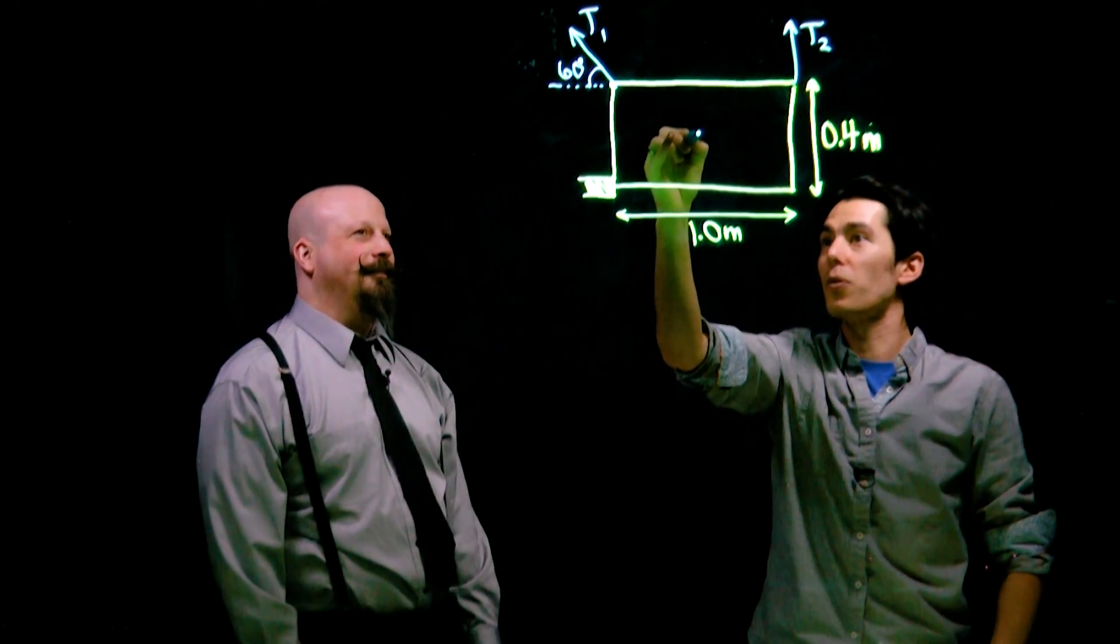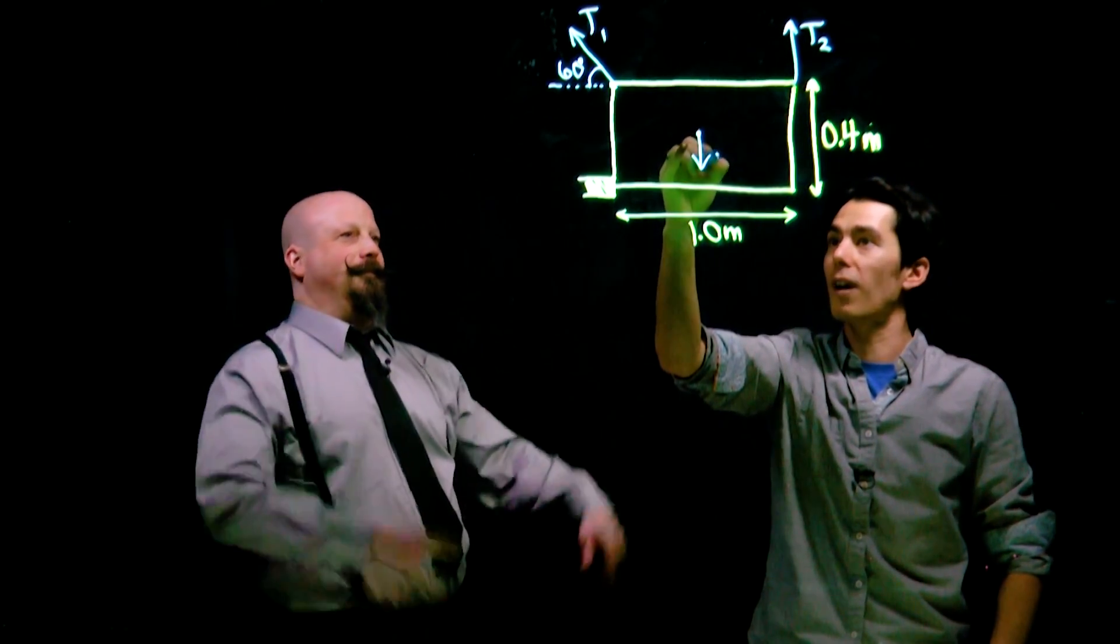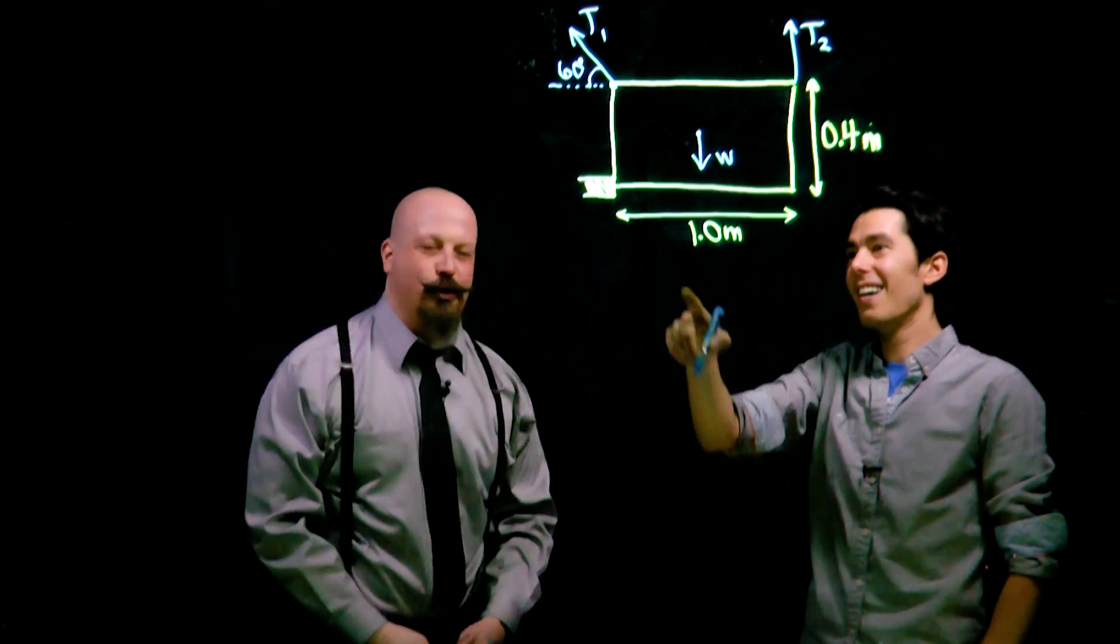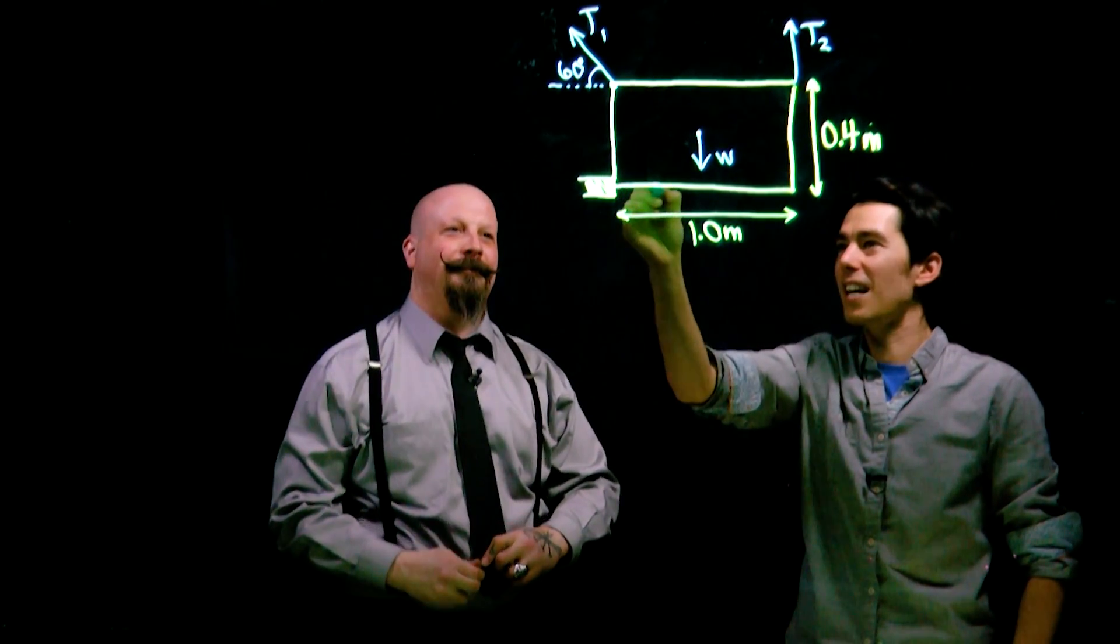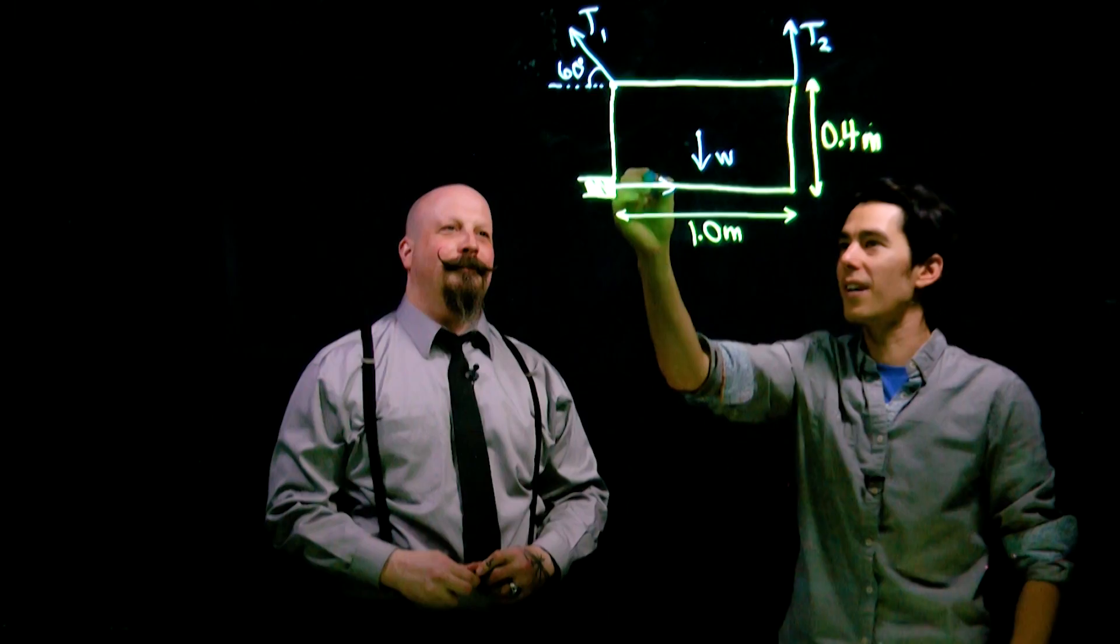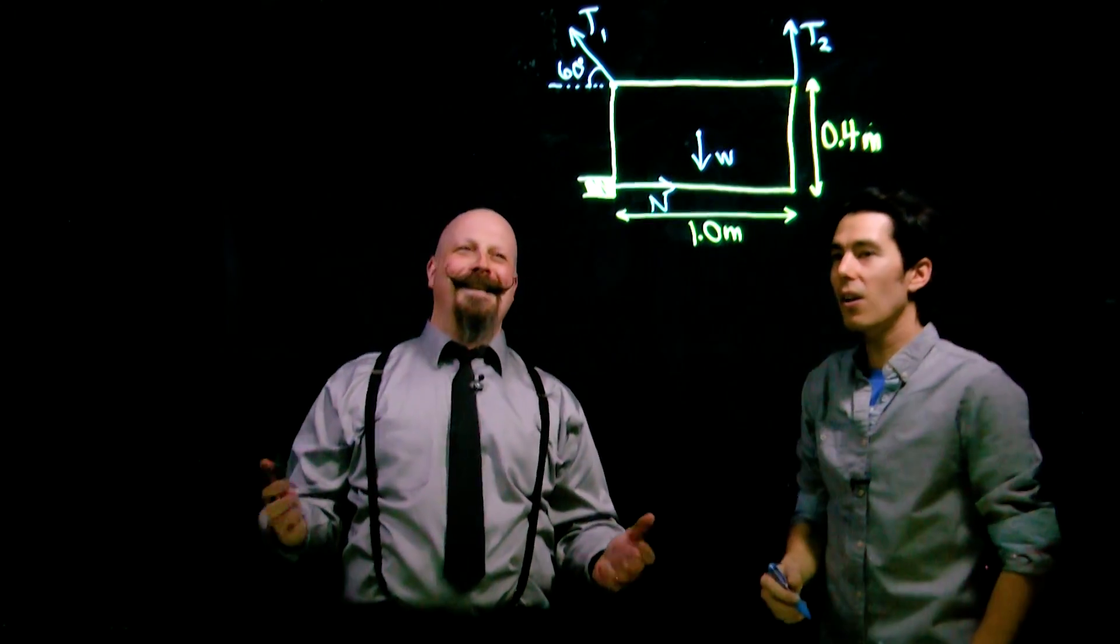The box is going to have some sort of mass or weight so we'll put a force of gravity acting at the center of mass straight down. And then finally, because there is contact here with this post, we'll put a normal force acting horizontally.